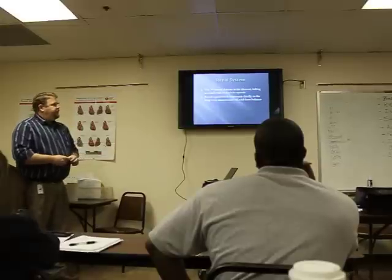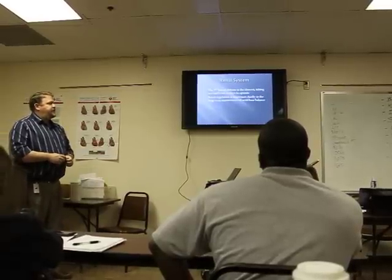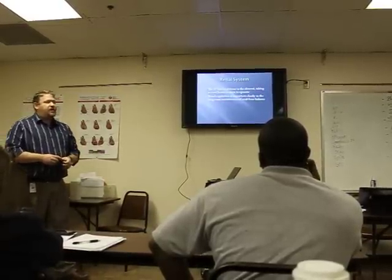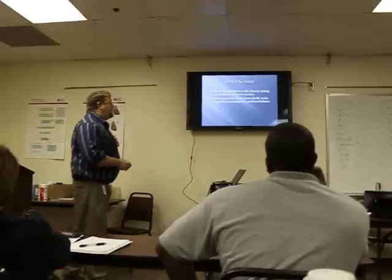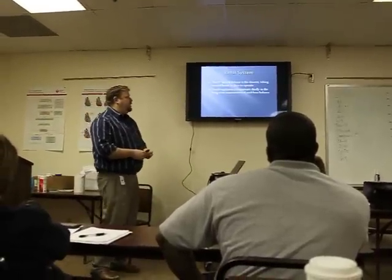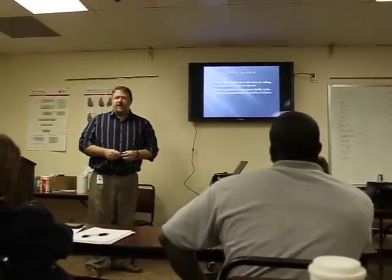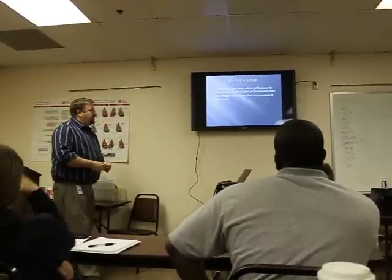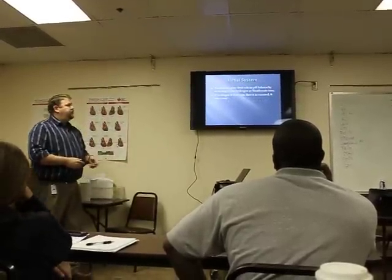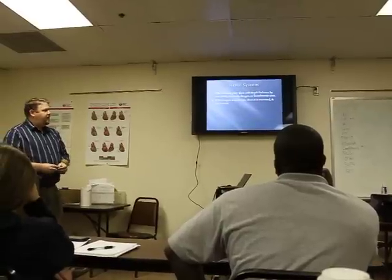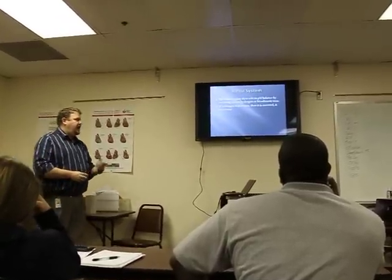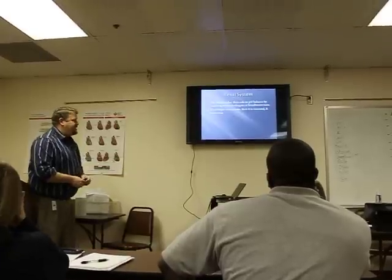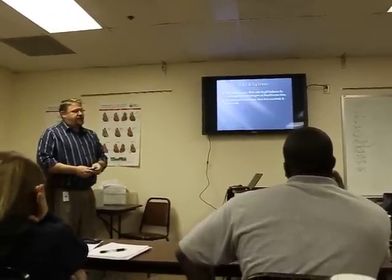The renal system is the third line of defense and also the slowest, taking several hours to days to operate. Renal regulation is important chiefly in the long-term maintenance of acid-base balance. It plays its role by excreting excess hydrogen and bicarbonate ions. If hydrogen is in excess, then it is excreted, and vice versa.